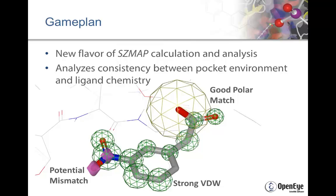A new way to run SHMAP and understand what it has to tell you about your binding site is with a tool called Game Plan. It analyzes consistency between the pocket environment and ligand chemistry. The large yellow ball shows a region where there's a very good polar match to the binding site. The green balls along the ligand indicate strong van der Waals interactions in the APO pocket, and the little purple tops indicate that the ligand is more polar at that site than the solvent was in the APO pocket.